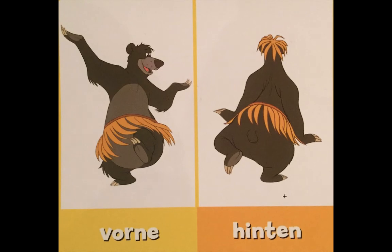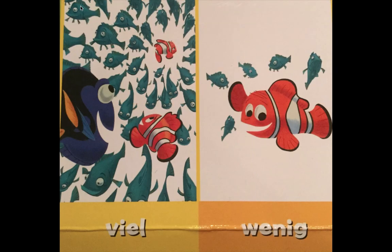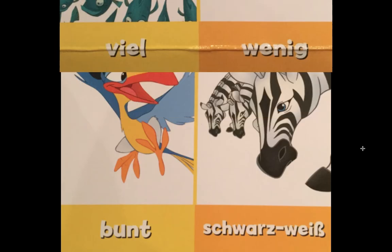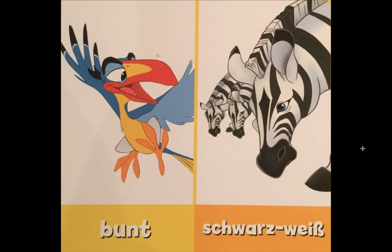Vorne is the front and hinten is the back. Viel — there is a lot. Wenig — there is less. Bunt is colorful. Schwarz-weiß is black and white.